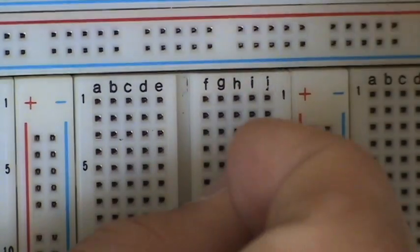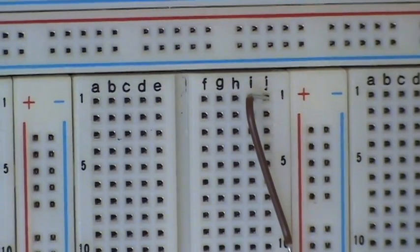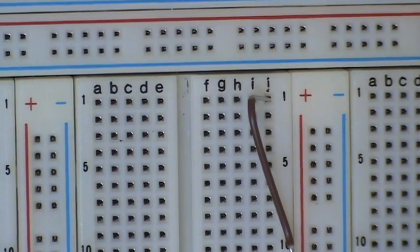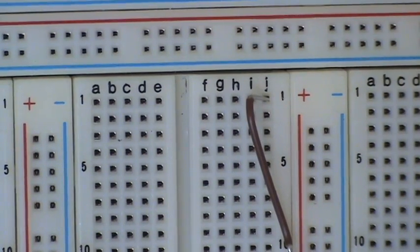So for example, say you connect a wire into here, top hole. Now anything to the left and right of it, let's see, F, G, H, I, J, A, B, C, D, E, F, G, H, I, J, yep.